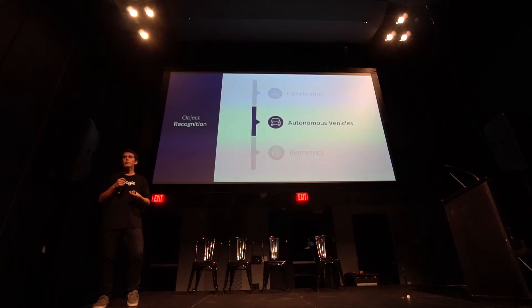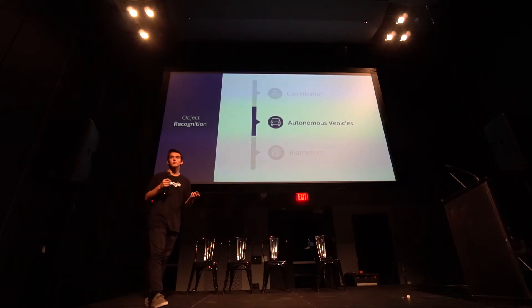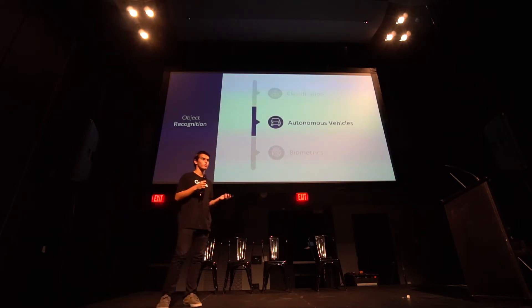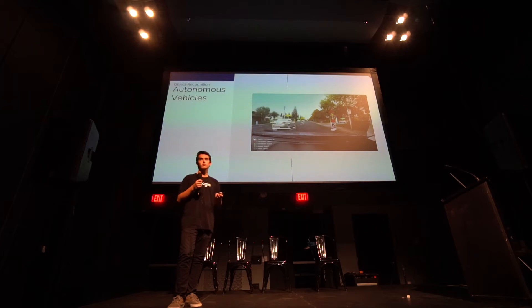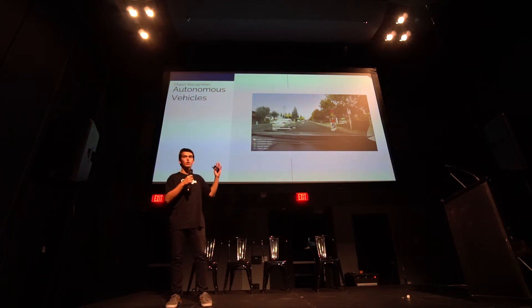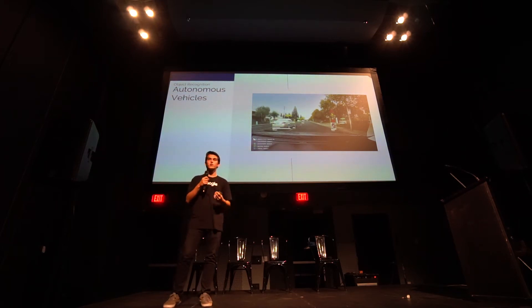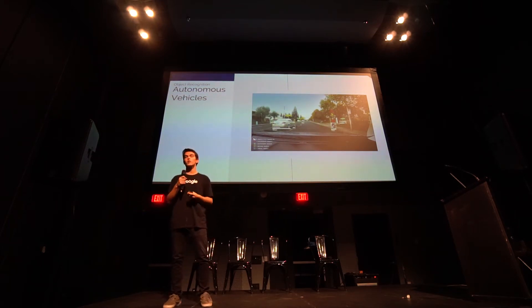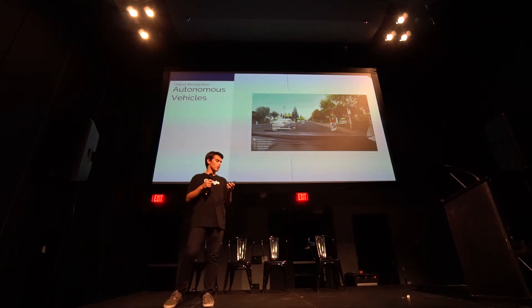The primary application of this right now is autonomous vehicles. When you look at articles about what a car sees when it's driving around, this is what that looks like: boxes around moving objects, cars highlighted in yellow, pedestrians on the side, and street signs. That's what everybody knows identification and classification for right now.